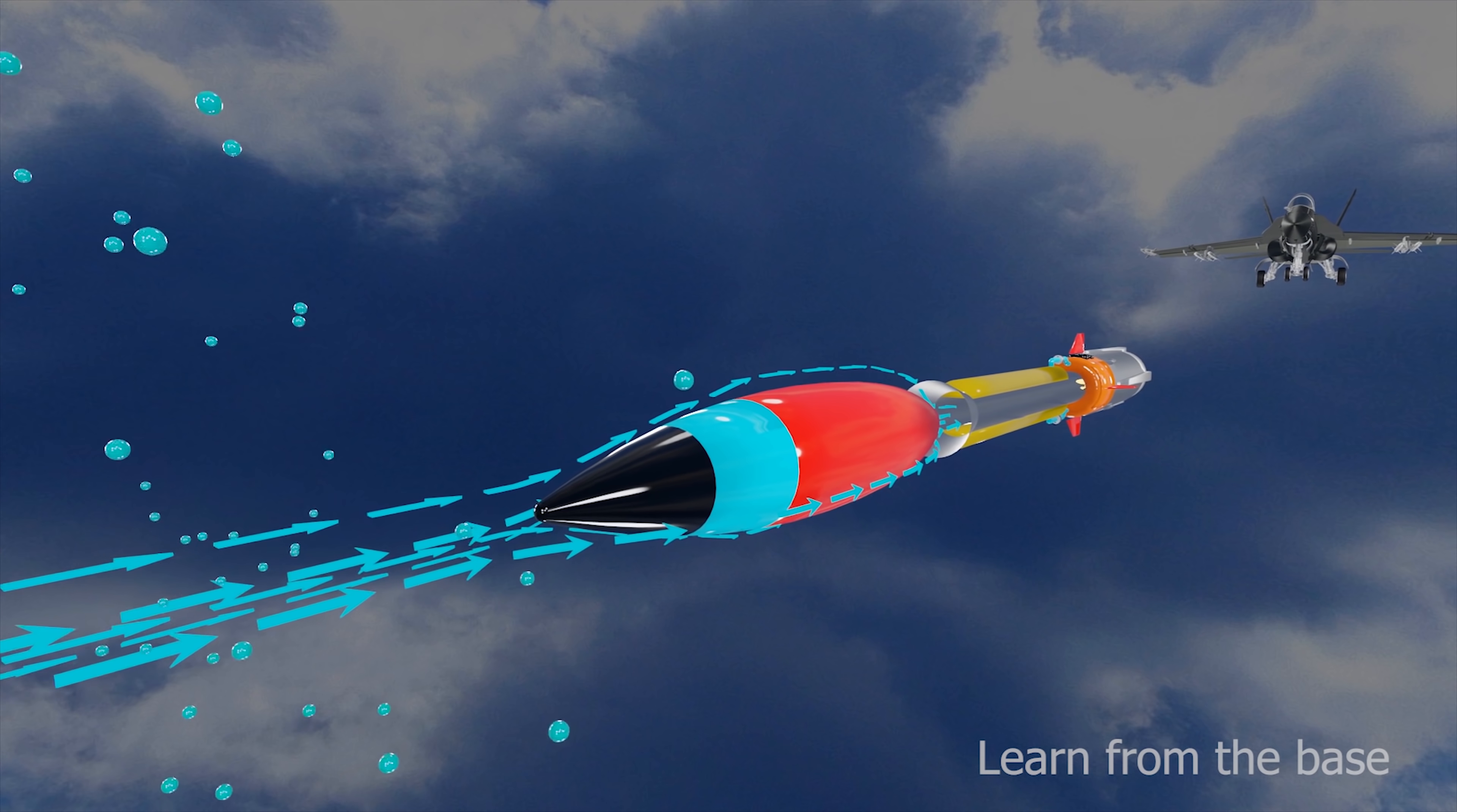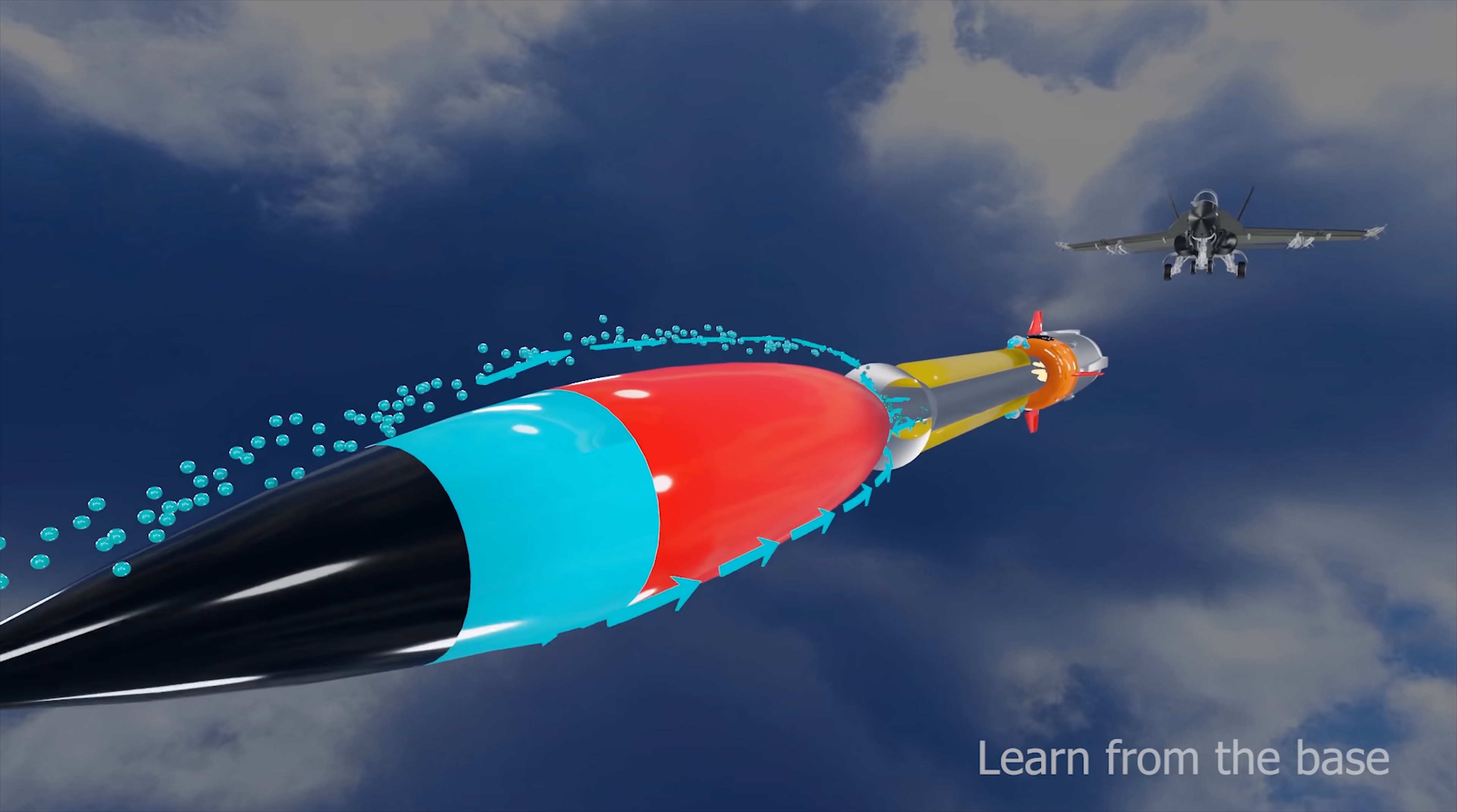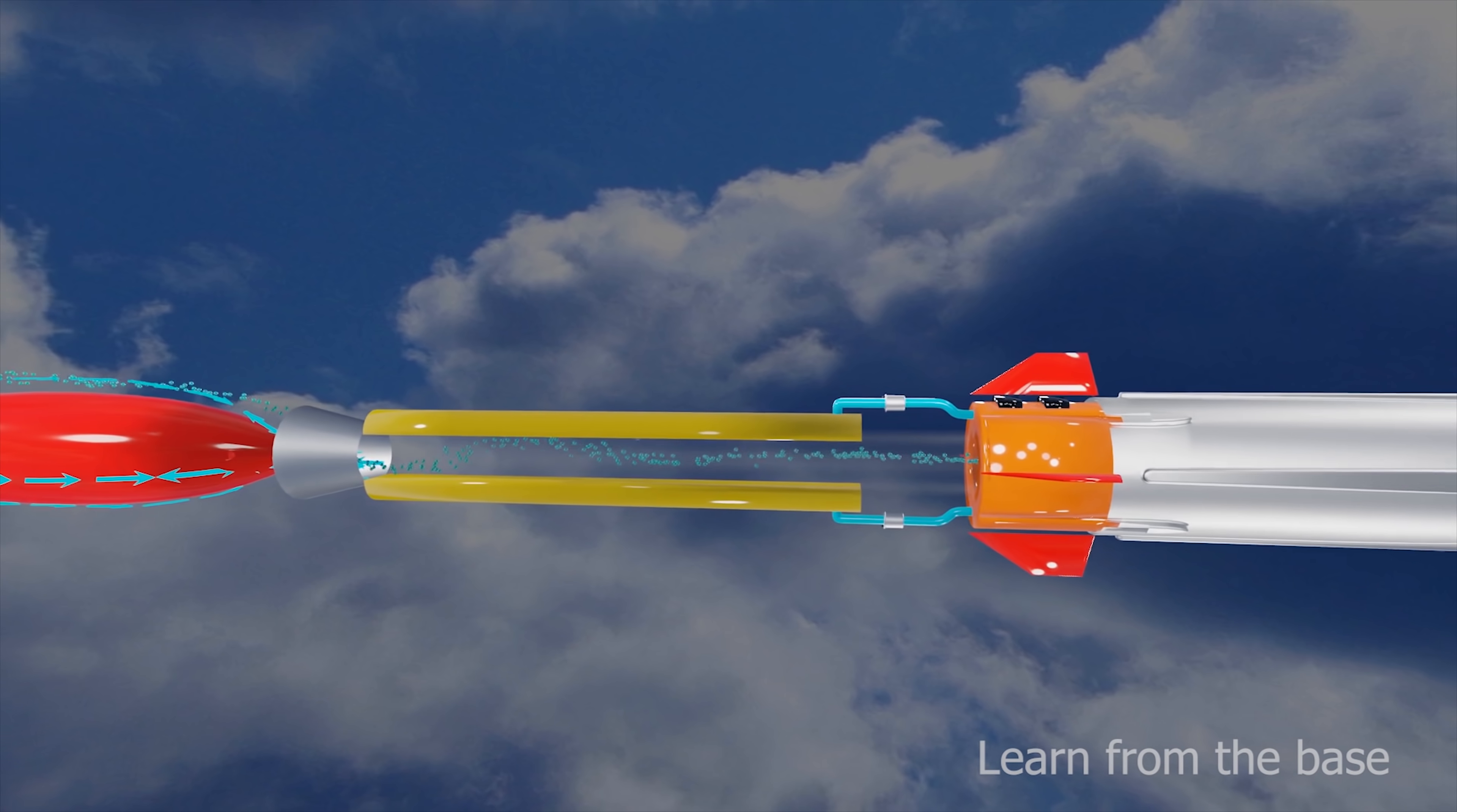During the high velocity of the missile, atmospheric air will enter into the missile at high pressure. Then the compressed air goes to the combustion chamber.